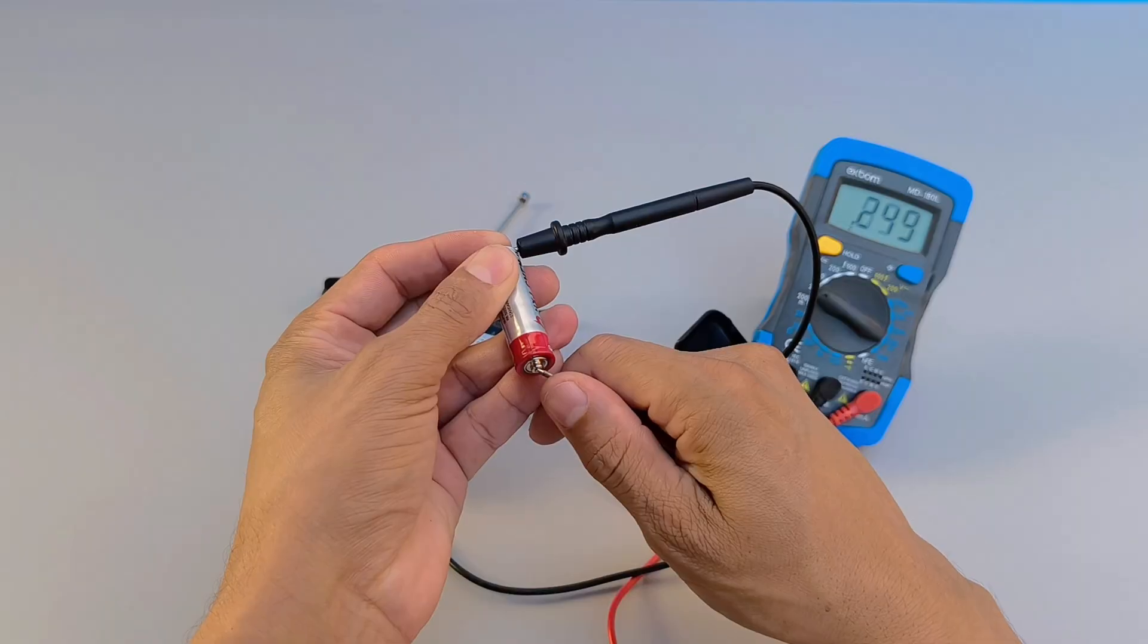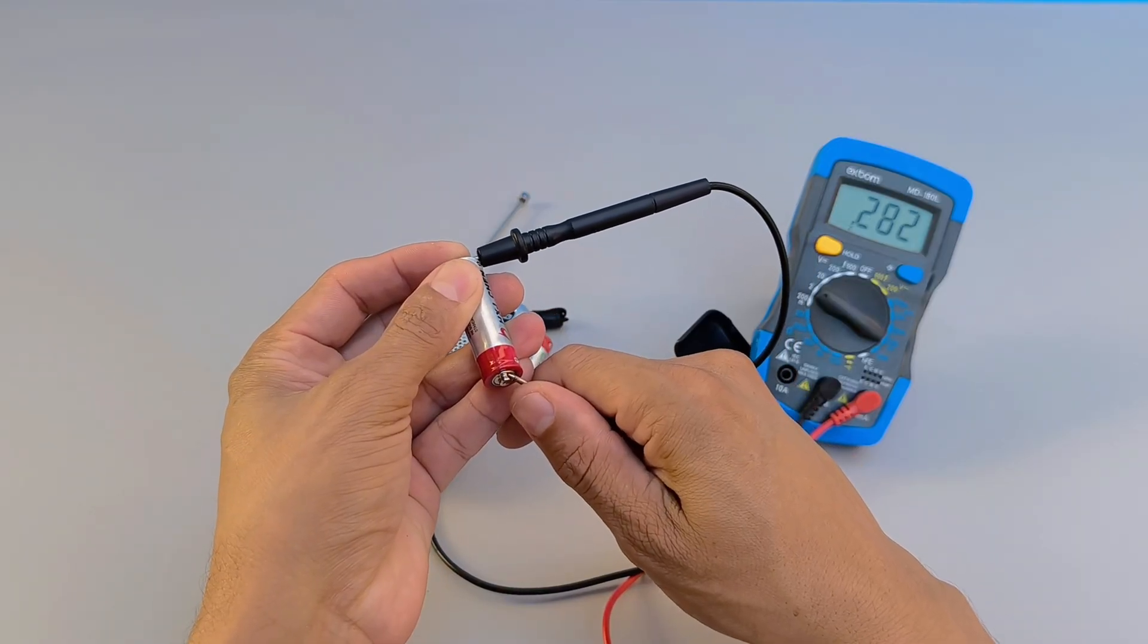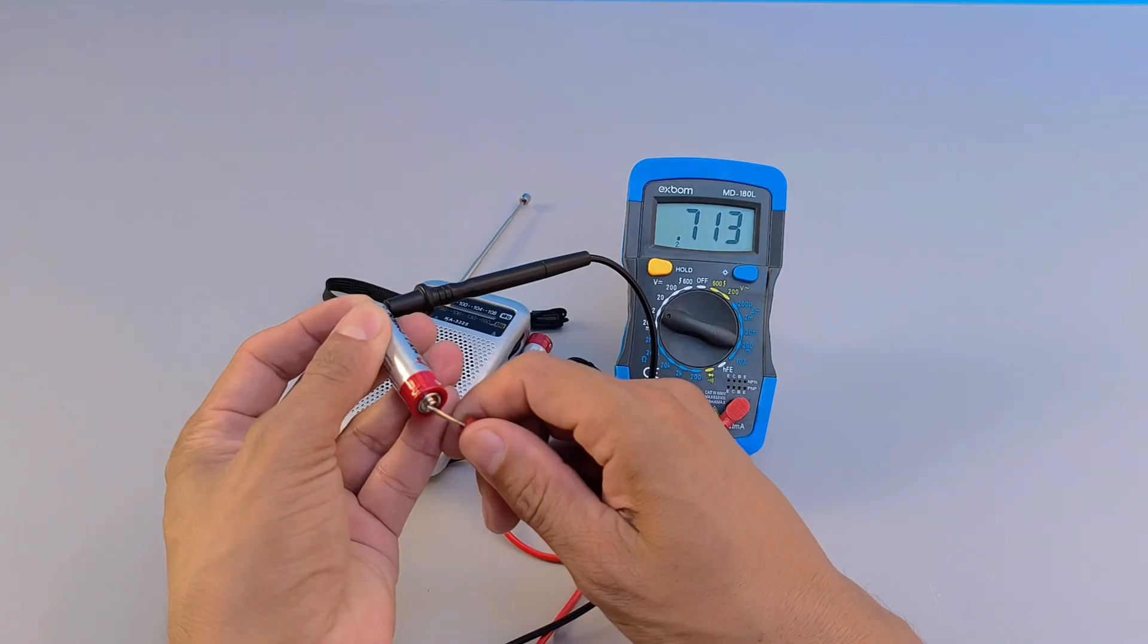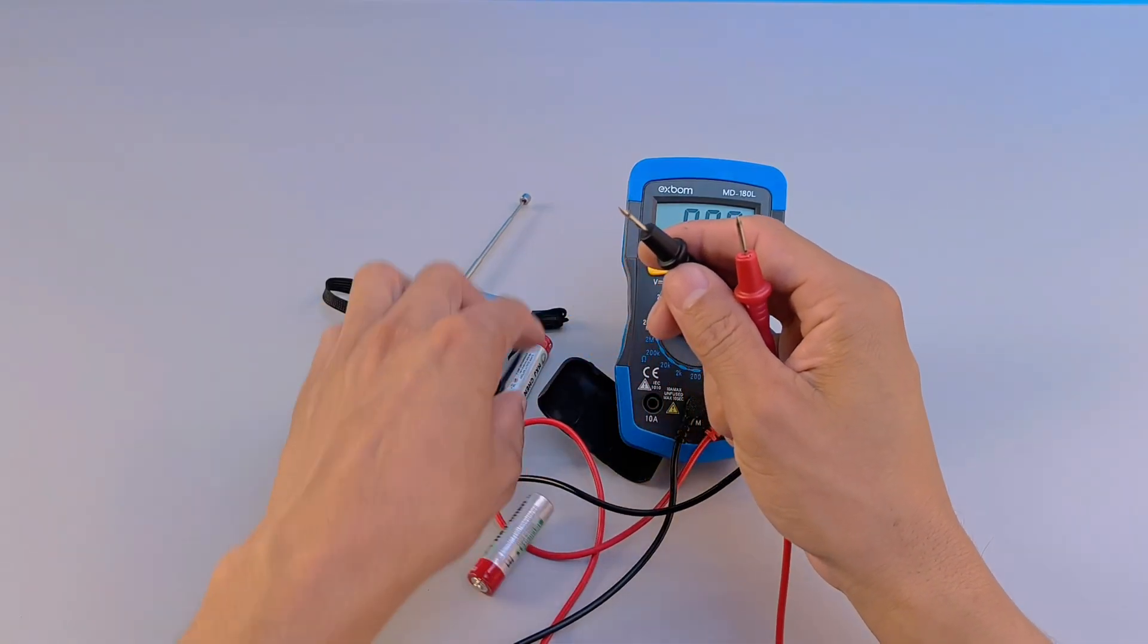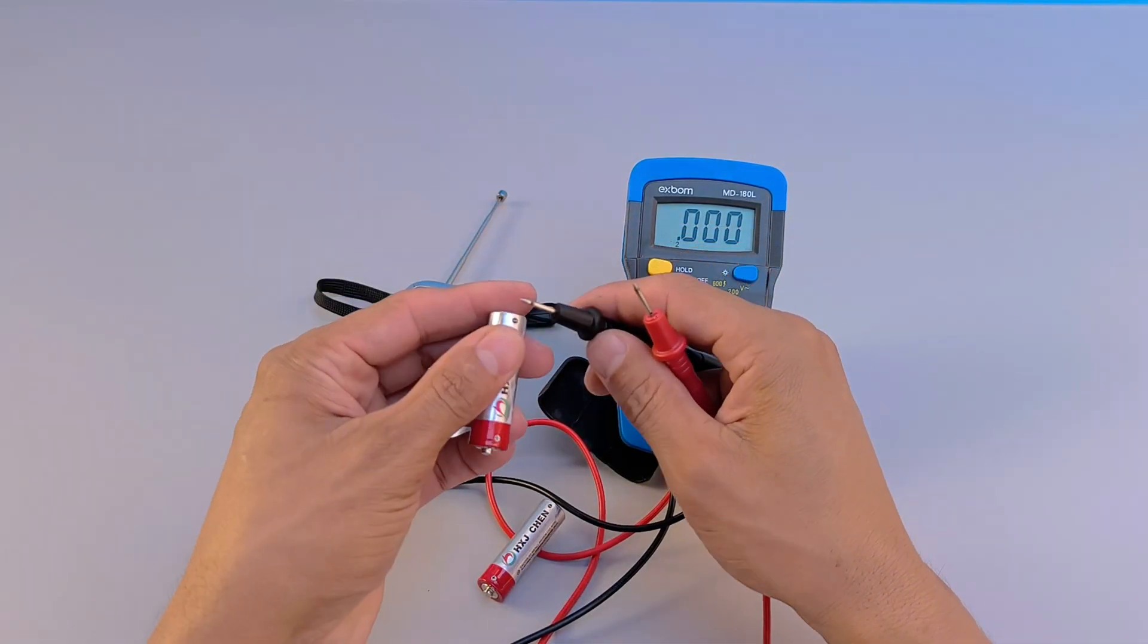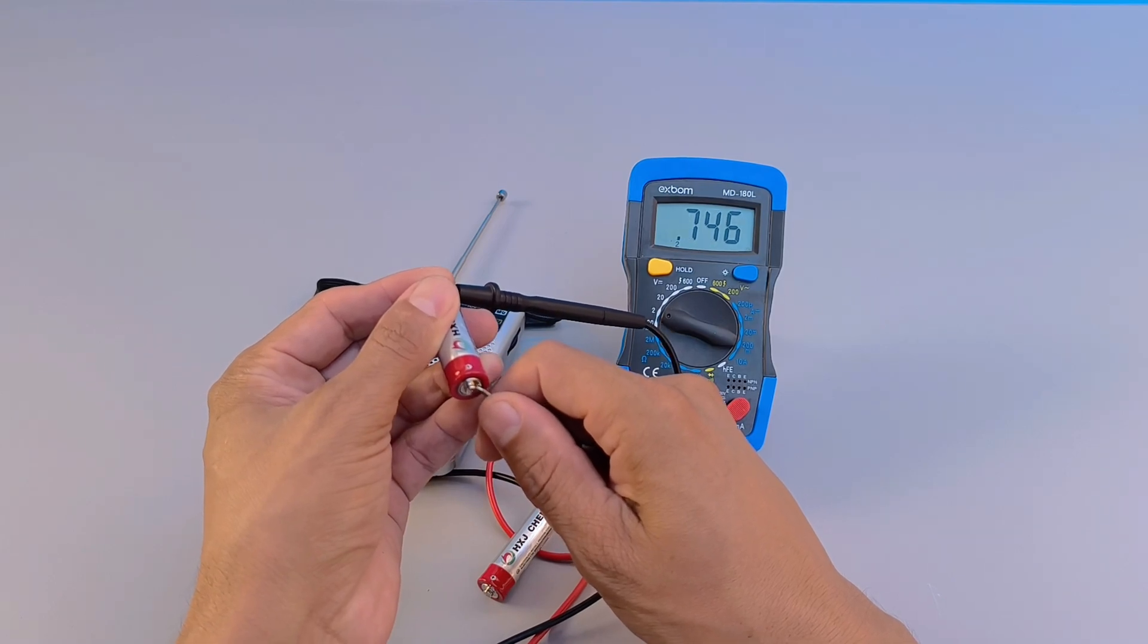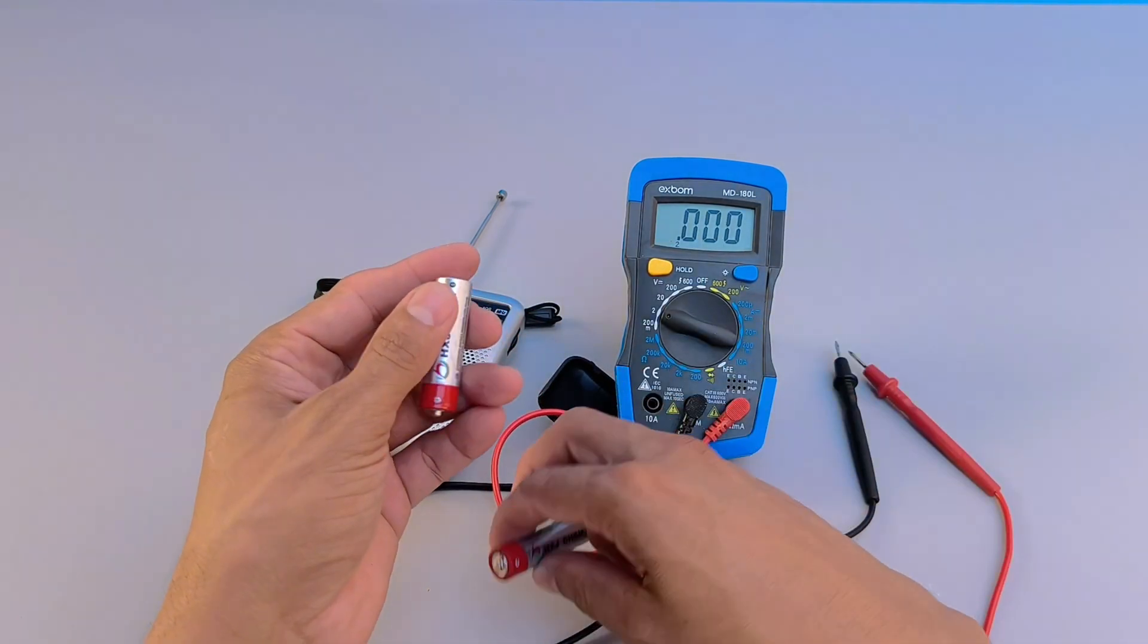Before discarding them, perform a voltage test using a multimeter. Set it to the appropriate voltage, touch the probes to the battery terminals, and take the measurement. If the reading indicates that they are practically discharged, don't worry. This is not the end, but an invitation to innovate.